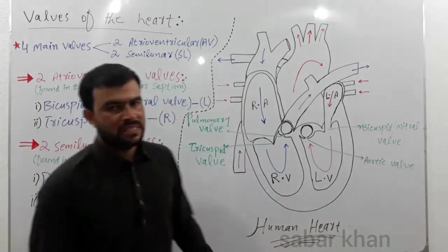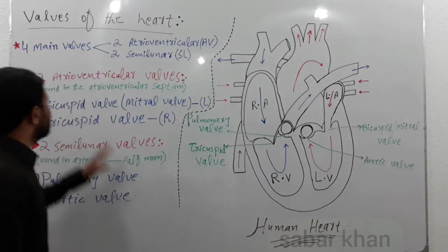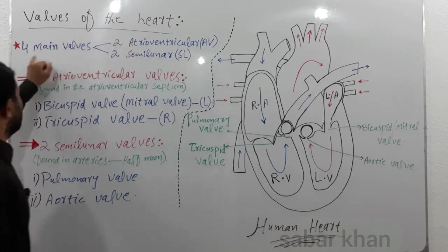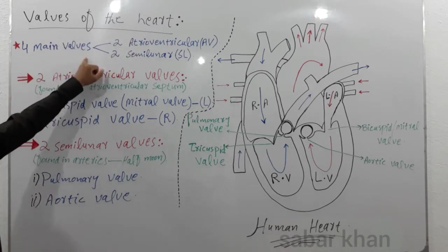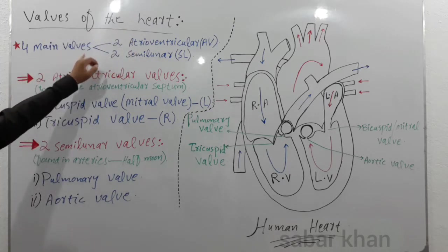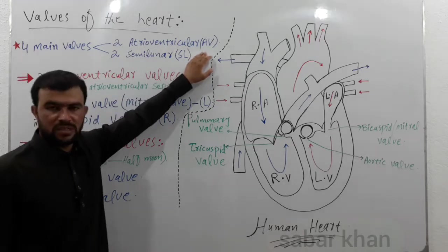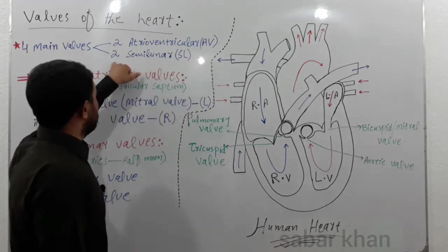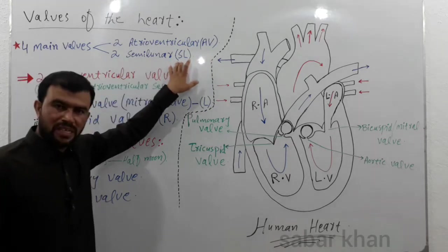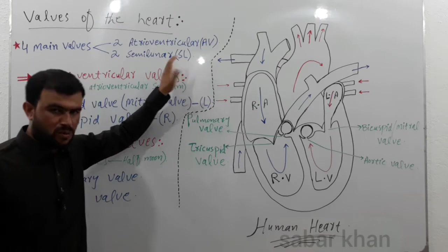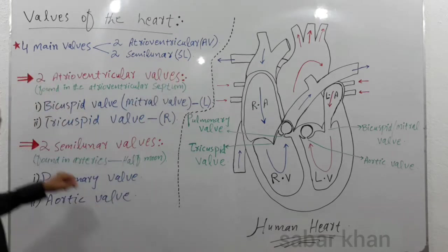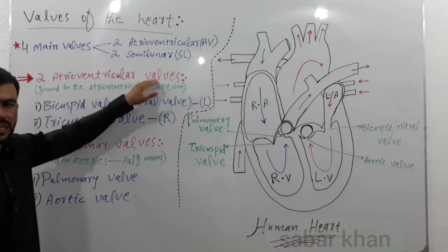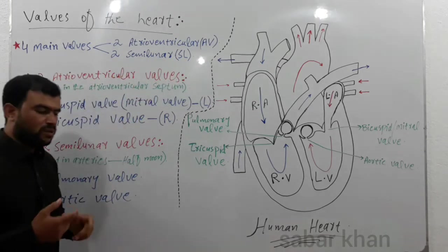Assalamu alaikum, this is Sabar Khani and the topic for today's lecture is walls of the heart. There are four main walls in the heart: two are the atrioventricular walls, denoted by AV walls, and two are the semilunar walls, denoted by SL walls. First we will come towards the two atrioventricular walls.